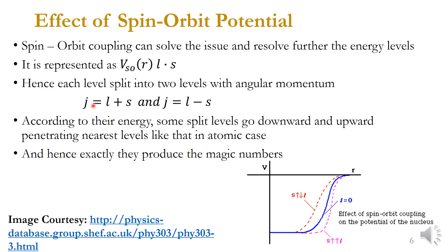The splitting gives total angular momentum j = l + s and j = l − s, just as in the atomic world. According to their energies after splitting, some levels shift downward and some shift upward. The j = l + s state goes upward and j = l − s goes downward.